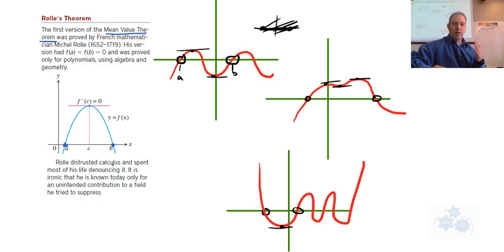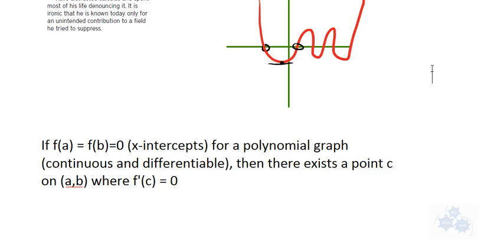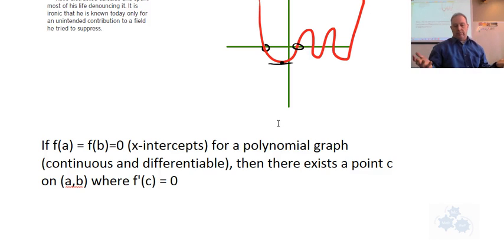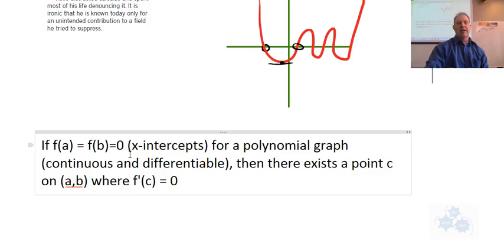And of course, Rolle's theorem. You want to just remember that if f of a equals f of b equals zero, there must be a point f of c where the slope of that tangent is zero. So you might want to just take a moment to jot that down for Rolle's theorem. This would be a good working explanation: if f of a equals f of b equals zero, that is x-intercepts for any polynomial graph, so it's continuous and differentiable, then there exists a point c on the open interval a to b where the derivative of that point c has to equal zero. So this is Rolle's theorem.